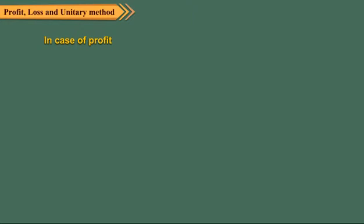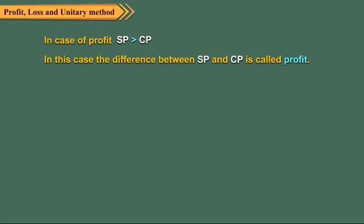So, in case of profit, the selling price (SP) is greater than the cost price (CP). In this case, the difference between SP and CP is called profit. So, profit is equal to SP minus CP.